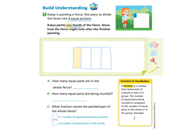Let's take a look at part A: How many equal parts are in the whole fence? Since we created four equal sections, we know there are four equal parts. Part B: How many equal parts are being counted? We only colored in one, so there is one equal part being counted — that's the yellow piece.